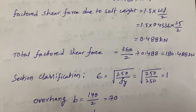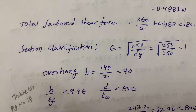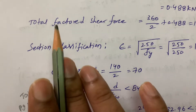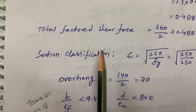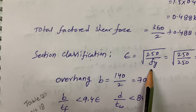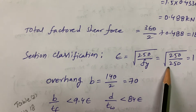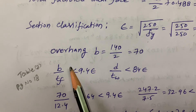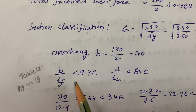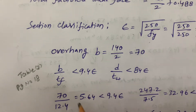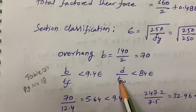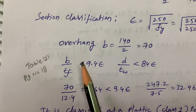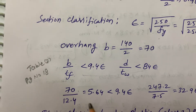The code specifies that we must classify the section as plastic, compact, or semi-compact. For section classification, ε = √(250/fy) = √(250/250) = 1. From Table 2, page 18 of the code, the limiting width-to-thickness ratios are: B/TF < 9.4ε and D/TW < 84ε.